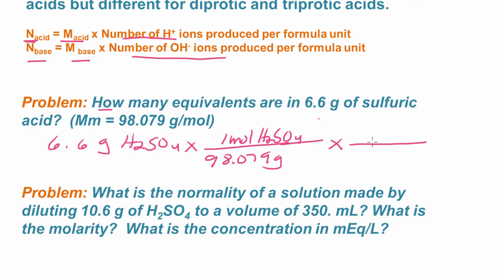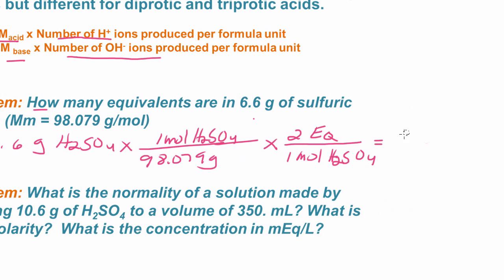And we see that sulfuric acid is a diprotic acid. So what we have is for every mole of sulfuric acid, we have two equivalents. And that's because of those two acidic protons. It's a diprotic acid. This works out to be 0.13 equivalents of the sulfuric acid.